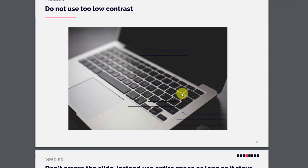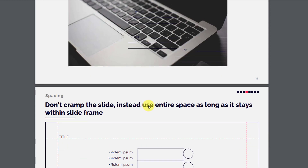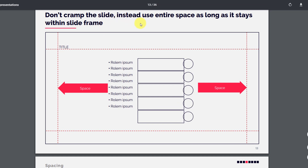Do not use too low contrast. You can see here it's very hard to read the text, and you can't even see the lines drawn. Please avoid too low contrast — where you need visibility, use white on dark or dark on light backgrounds to ensure text and elements are readable.